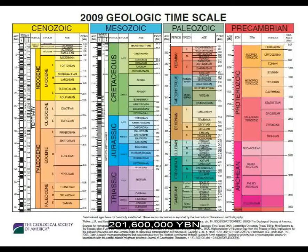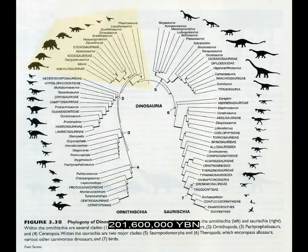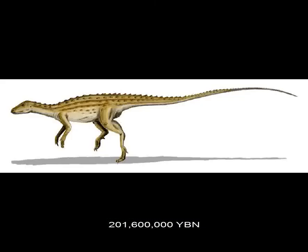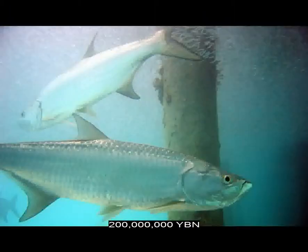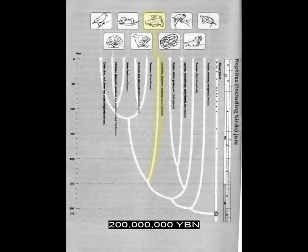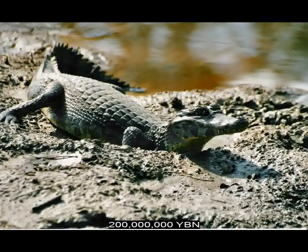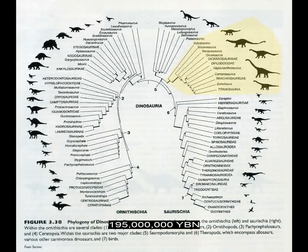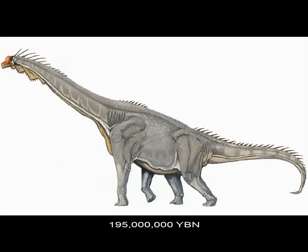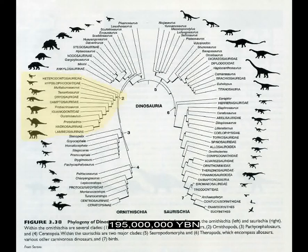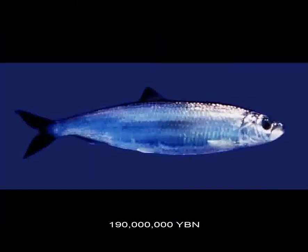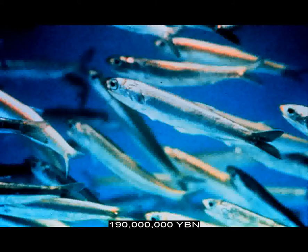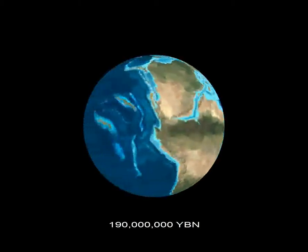The Ornithischians Thyreophora evolve—ancestor of the armored ankylosaurs and the plated stegosaurs. The teleosts' eels and tarpons evolve. The reptiles Crocodilia evolve—ancestor of crocodiles, alligators, and caimans. The sauropod dinosaurs evolve—ancestor of large long-necked dinosaurs like Apatosaurus, Brachiosaurus, and Diplodocus. The Ornithischian ornithopoda evolve—the duck-billed dinosaurs, ancestor of the hadrosaurs. The teleosts' herrings and anchovies evolve. The supercontinent Pangea splits into Laurasia and Gondwana. The northern part, Laurasia, will form North America and Europe; the southern part, Gondwana, will form South America and Africa.